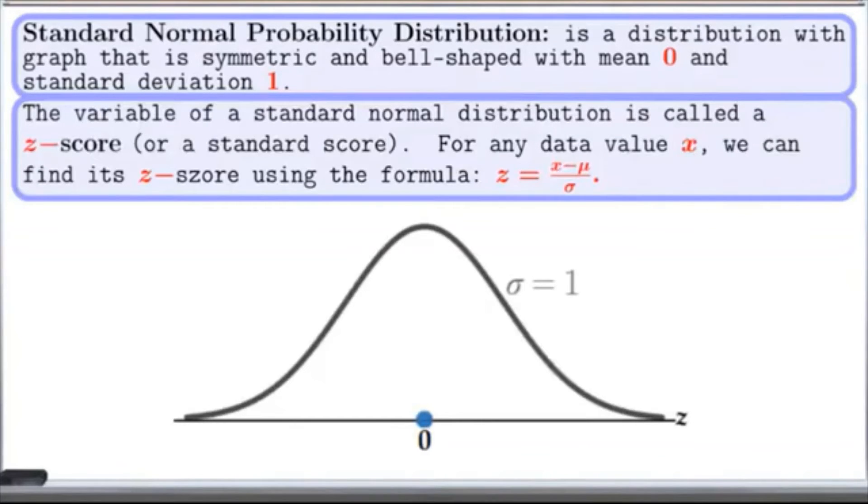The variable of a standard normal distribution is called a z-score or a standard score. For any data value x, we can find its z-score using this formula here.